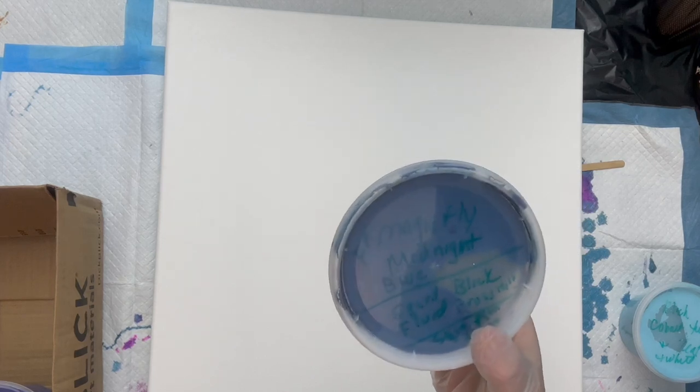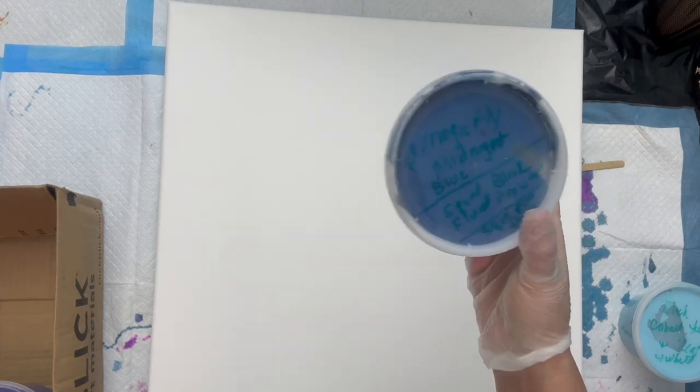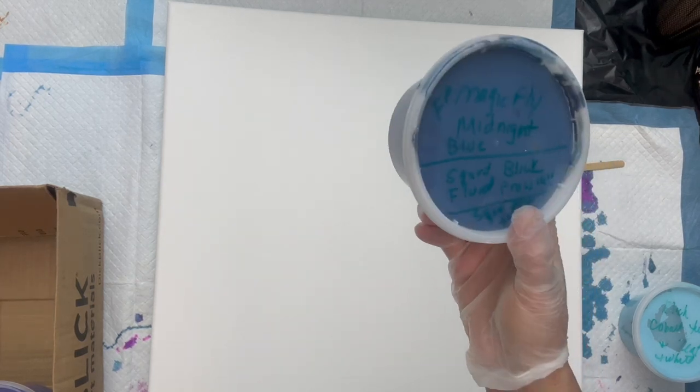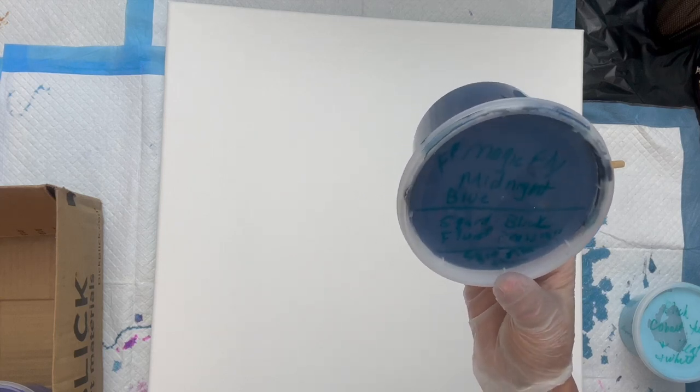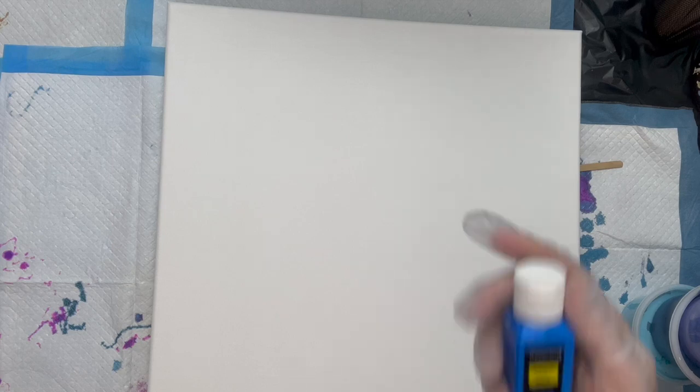I've mixed a bunch of colors this time. This is Magic Fly, this is a brand that I had a whole bunch of these bottles and they have kind of a shift to them, so I want to get rid of them. So let's try it. This is Midnight Blue and it has a squirt of Blick Fluid Prussian Blue. And then I have Magic Fly Mysterious Purple.